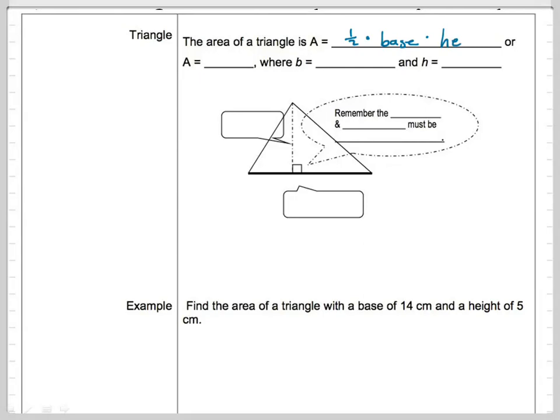Whoa, we got base times height again in here. There's another activity that we can do for the triangle, but we don't have time right now. So one half times B times H, where B is your base. That was a funny sneeze. And H is your height.